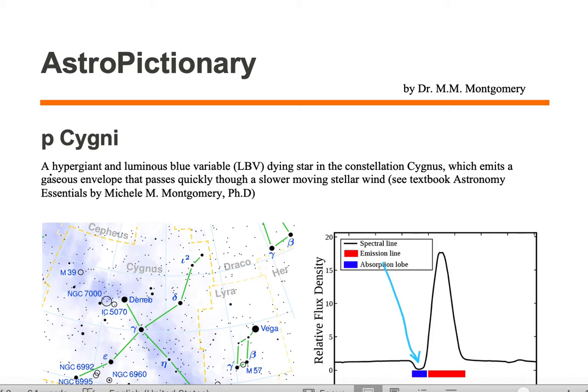P. Cygni is a hypergiant and a luminous blue variable dying star in the constellation Cygnus, which emits a gaseous envelope that passes quickly through a slower moving stellar wind.